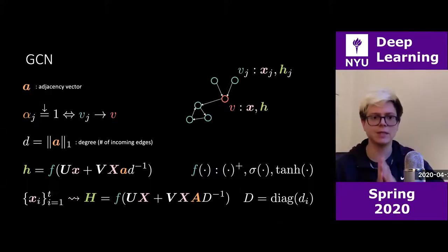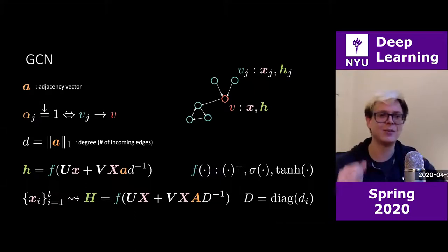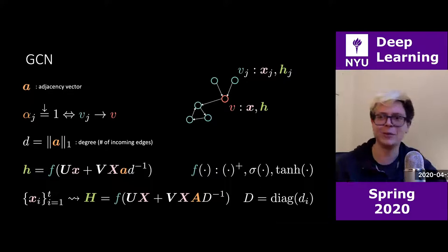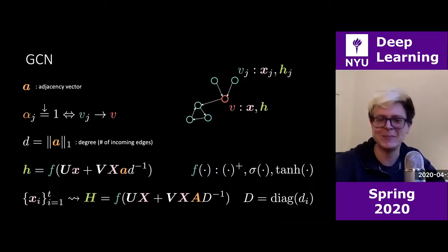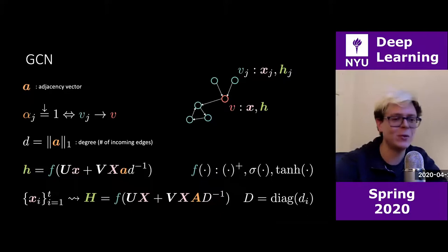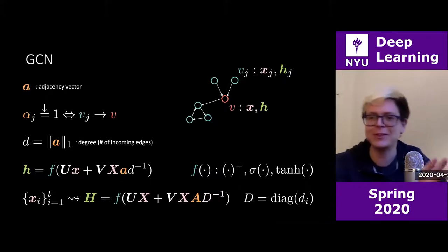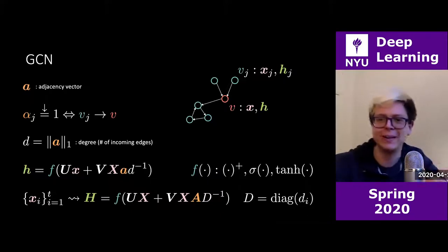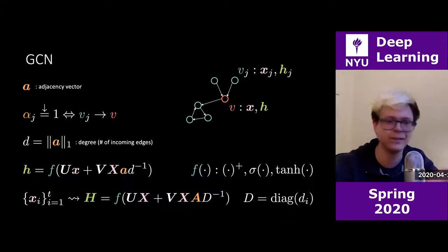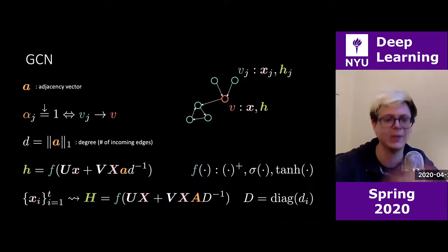That's it — graph convolutional networks. It looks like attention to me. There's nothing here we haven't seen before: just non-linearities and self-connections.